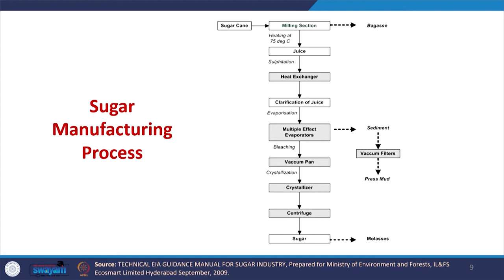This is the flow diagram of sugar production. We have sugarcane entering the milling section where bagasse gets produced. This bagasse is used in pulp and paper industries and in boilers for producing steam, extracting heat energy.